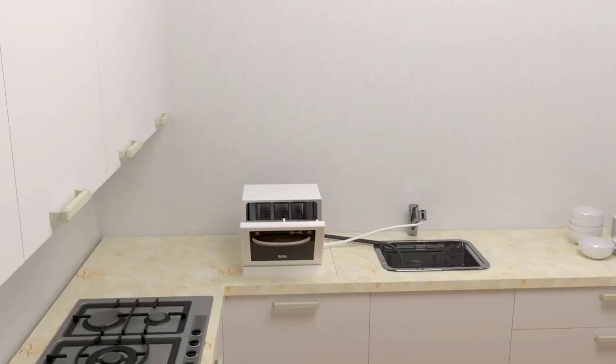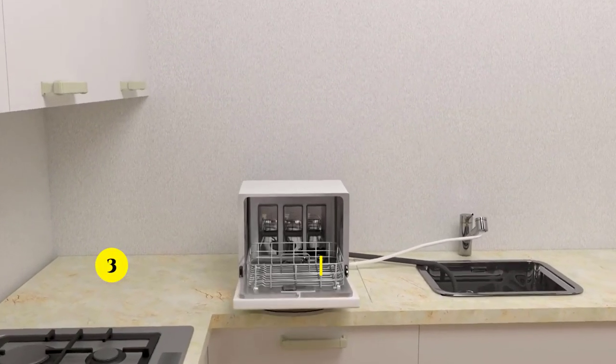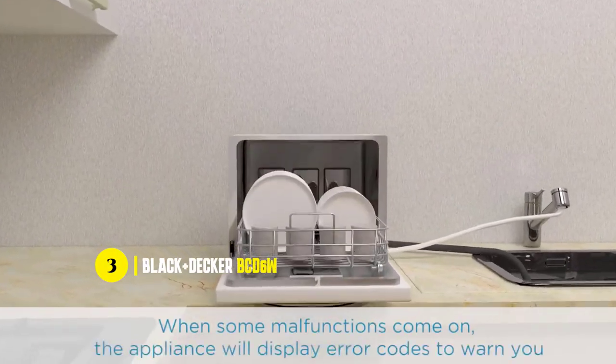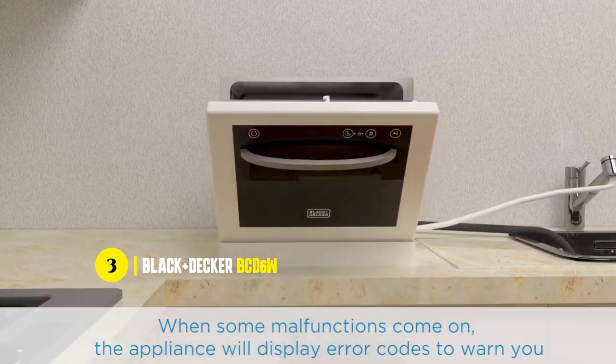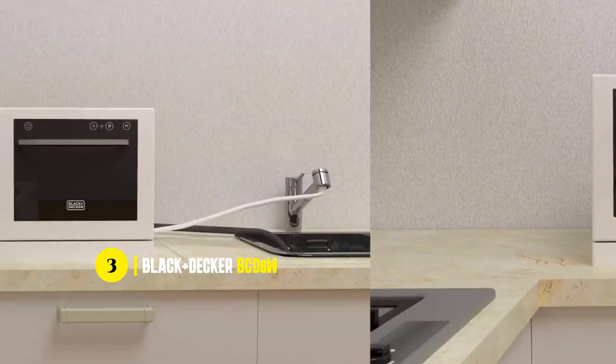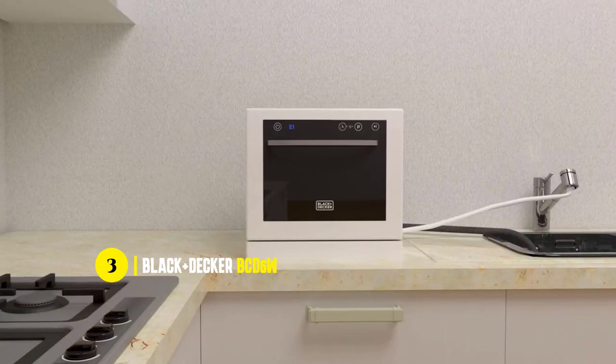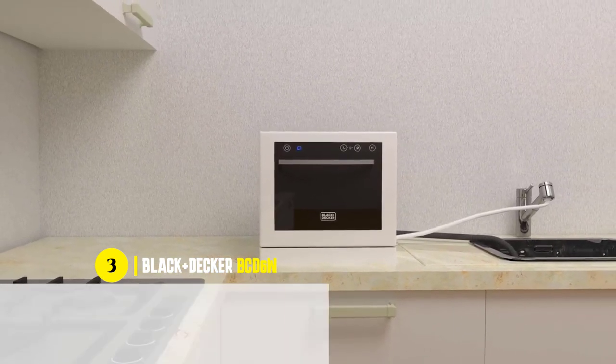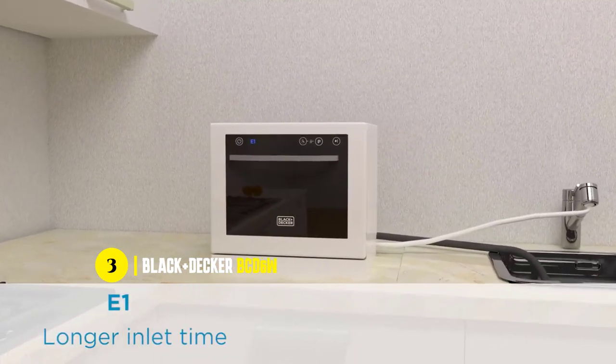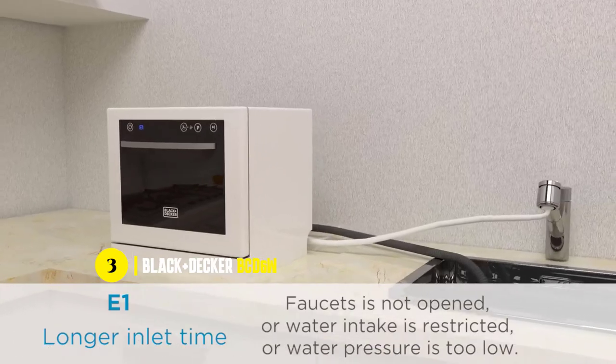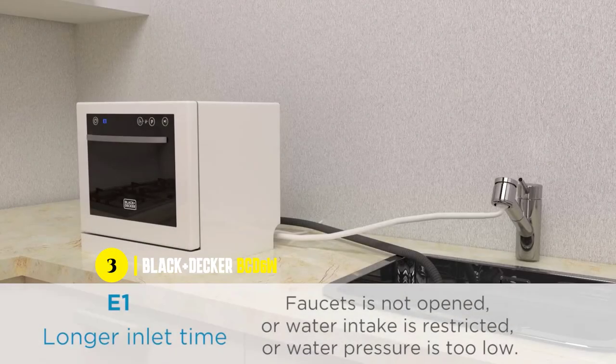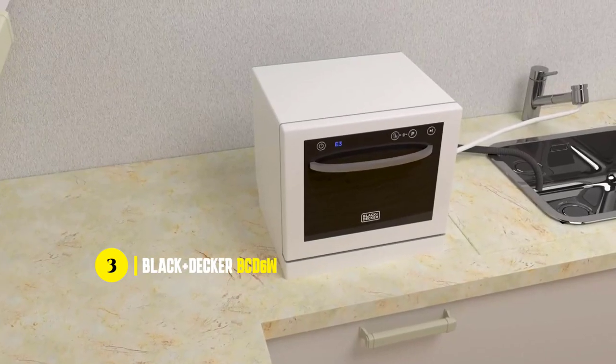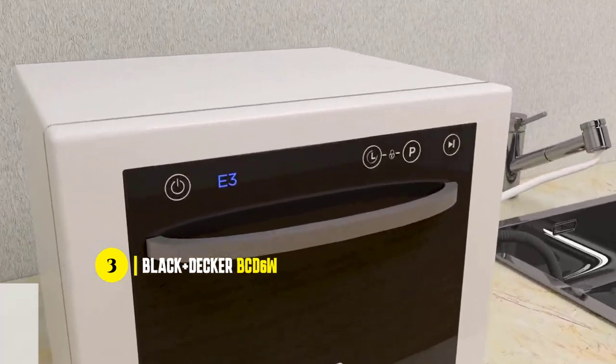Next on our list is the Black Plus Decker BCD6W Compact Countertop Dishwasher. If you're looking for a compact dishwasher that packs a punch, the Black Plus Decker BCD6W is a fantastic choice. With seven wash cycles to choose from, you're sure to find one that suits your needs. Whether you're looking for a quick 90-minute wash or a more intensive clean, this dishwasher has got you covered.